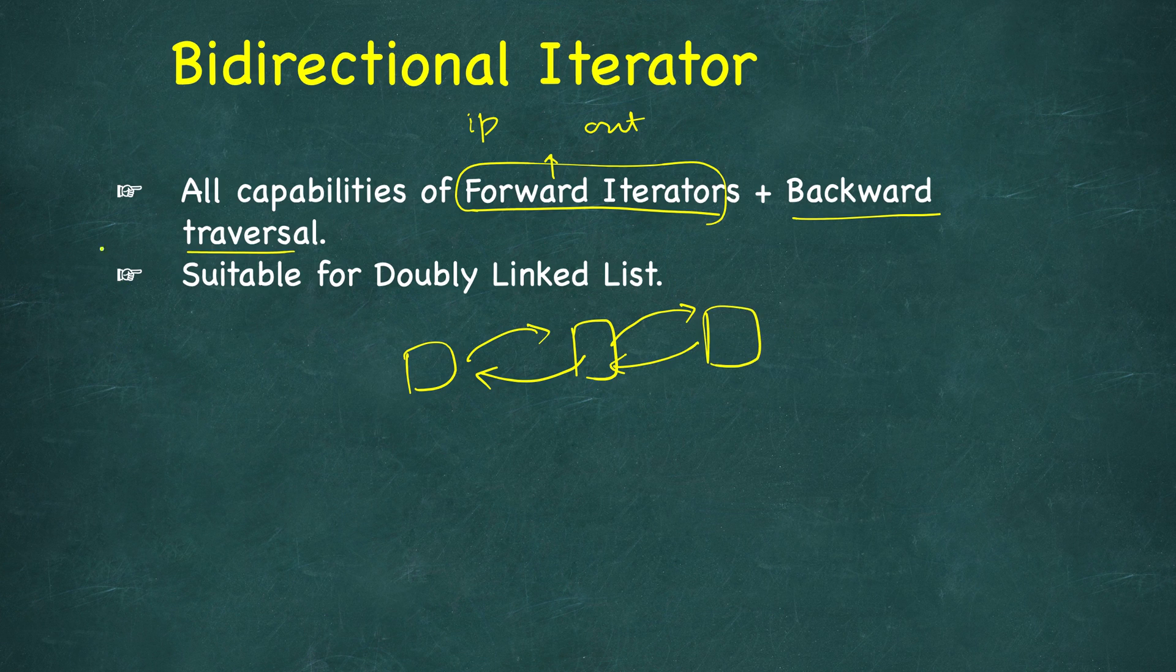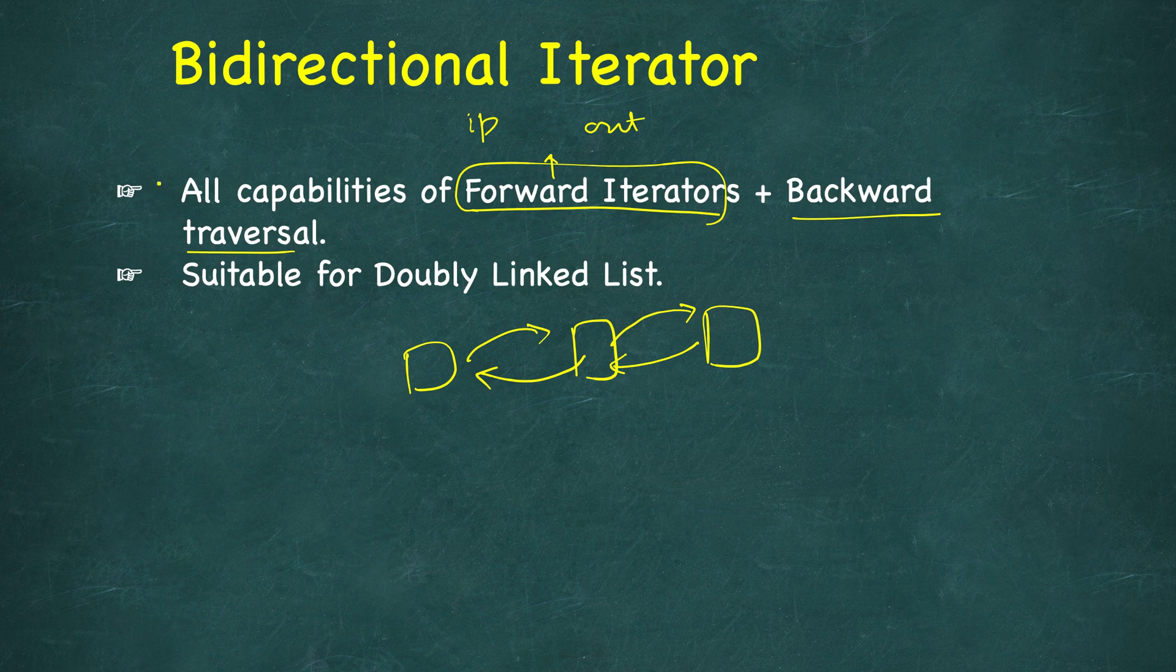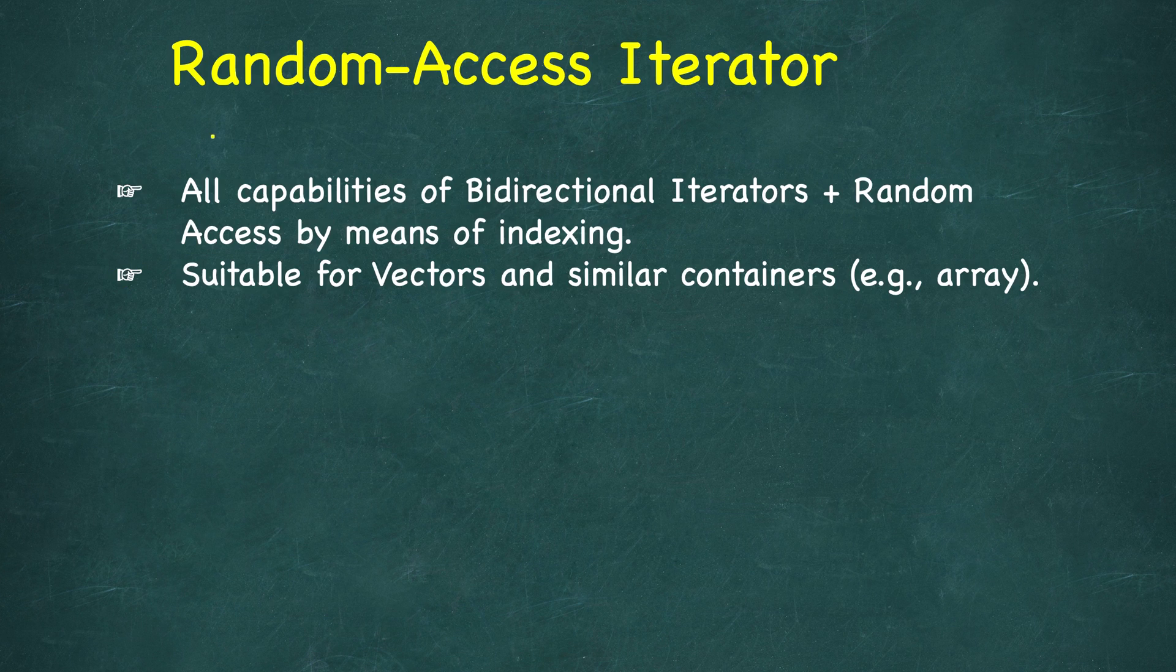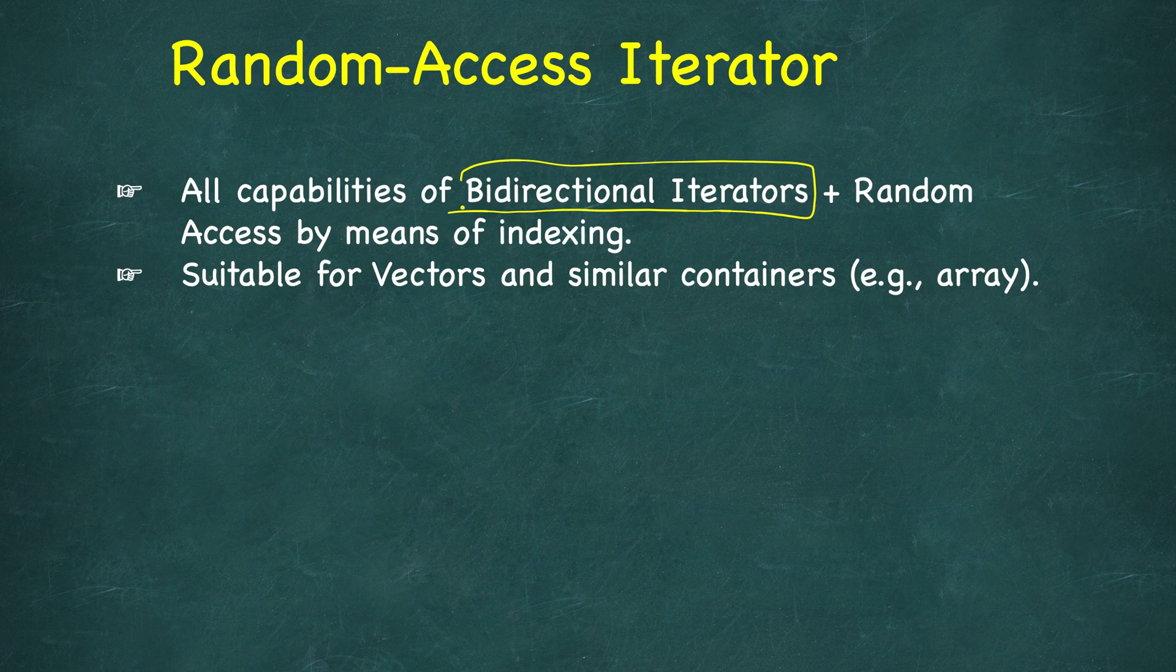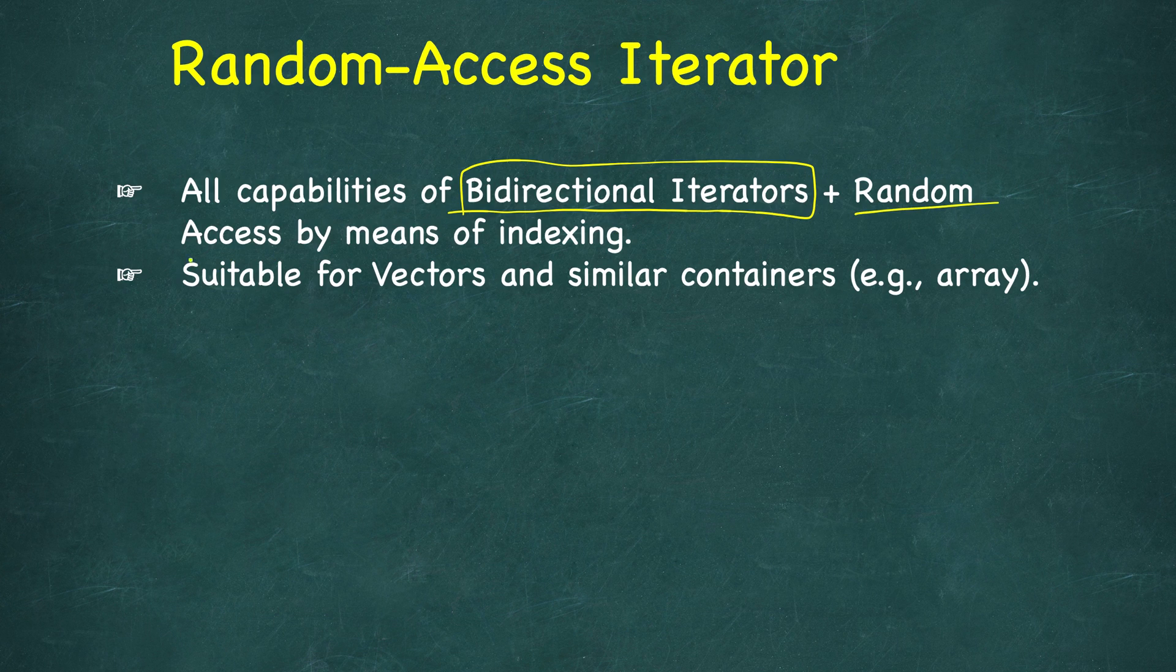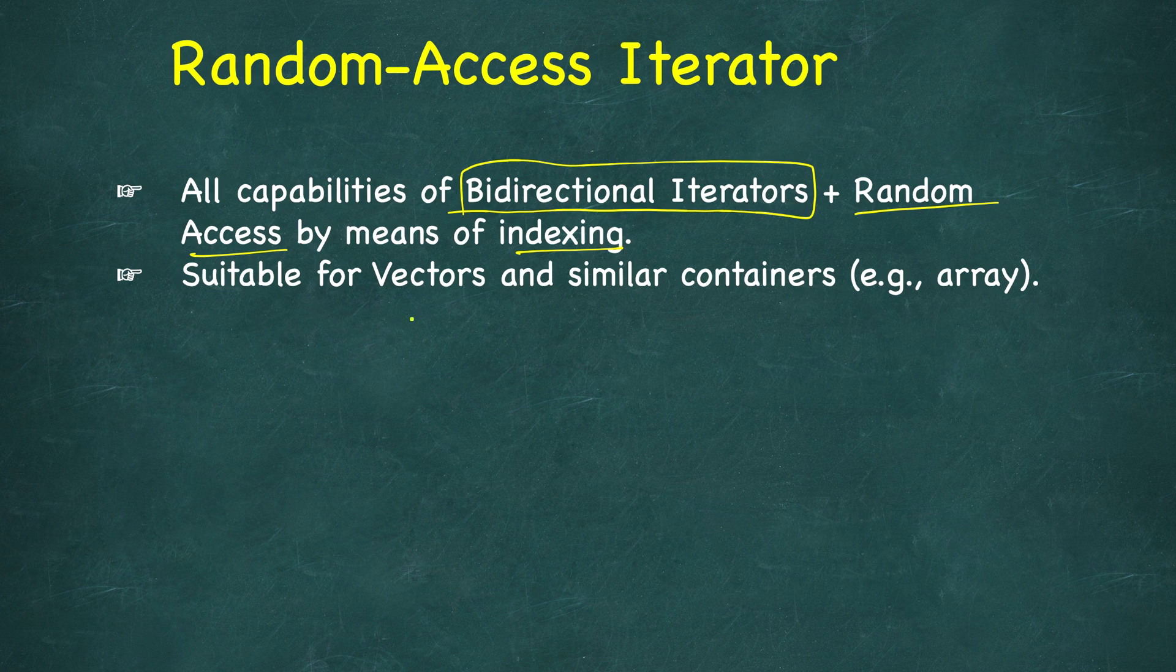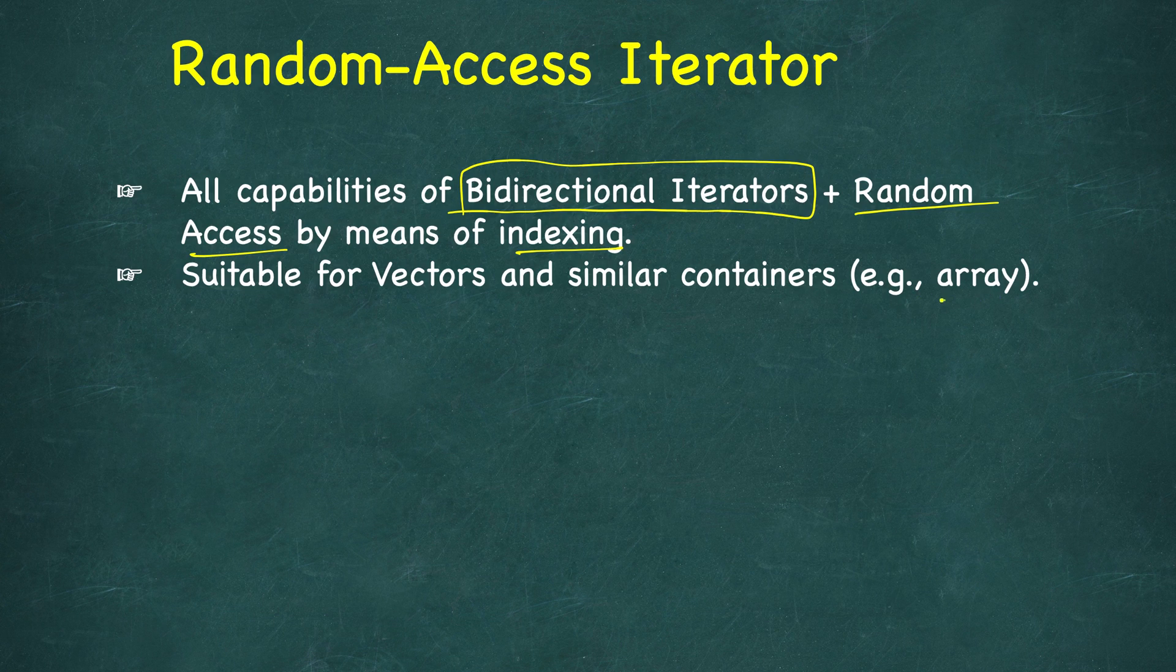Then the next one - you are noticing that the iterators are becoming more and more powerful. Finally, we have the most versatile one: random access iterator. It combines the capabilities of all the previous iterators, including bidirectional iterator, and additionally provides random access by means of indexing. Random access was not present in any of the previous types. These are suitable for vectors and similar containers, for example arrays.